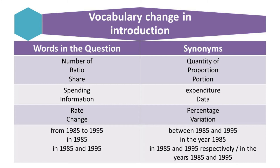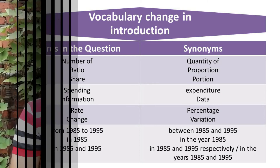We also have ways to express years and dates differently. For example, '1985 to 1995' can be changed to 'between 1985 and 1995.' 'In 1985' can be written as 'in the year 1985.' If you have both 'in 1985 and in 1995,' you can write 'in 1985 and 1995 respectively' or 'in the years 1985 and 1995.' These are some words common in your introduction, and using these synonyms will help you produce a good introduction.